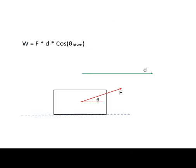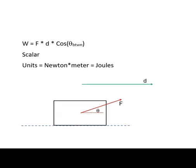This is an introduction to the work-energy principle. Work is calculated as the product of the magnitude of a force times the displacement times the cosine of the angle between them. Work is a scalar and its units are Newton meters, which are equivalent to joules.